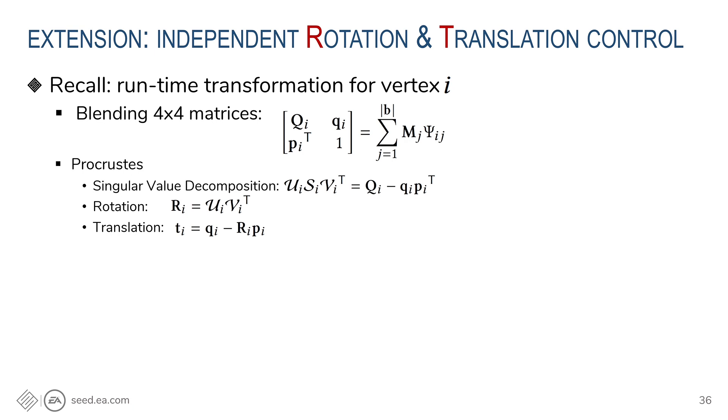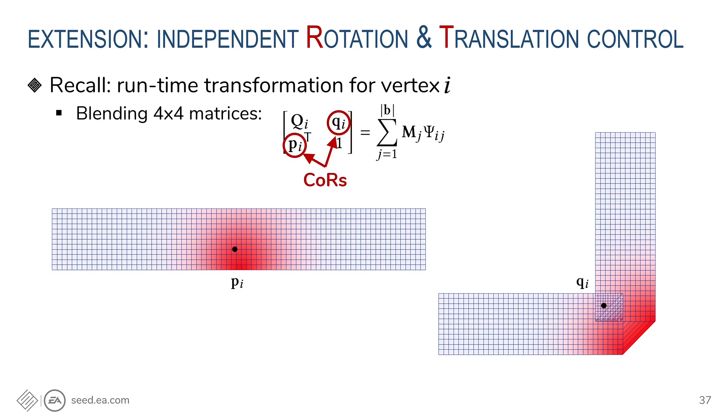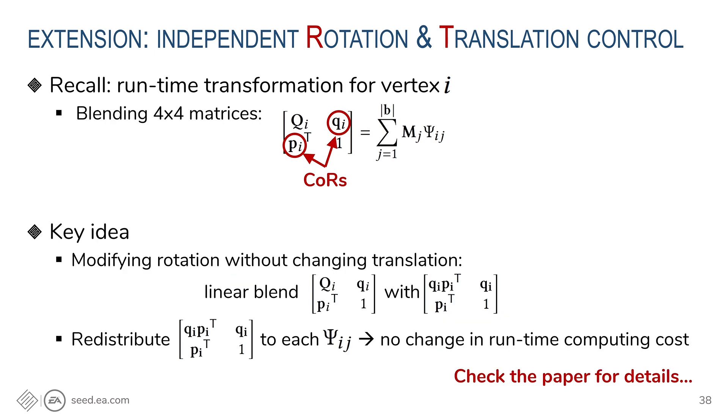Let's revisit the algorithm here. We found that after blending transformations to get the 4x4 matrix, the two sub-blocks here are center rotation of the Laplacian local patch. P_i corresponds to the rest pose and Q_i corresponds to the articulated pose. If we use this Q times P transpose to construct a new 3x3 submatrix and blend it into the original, we can change the rotation matrix without changing the translation. Once we have the new matrix, we can redistribute them back to each of the multi-weight Ψ_ij, so that the runtime algorithm, the change will be transparent. Therefore, it does not increase runtime computing cost. That's a high-level idea, and please check the paper for more details.